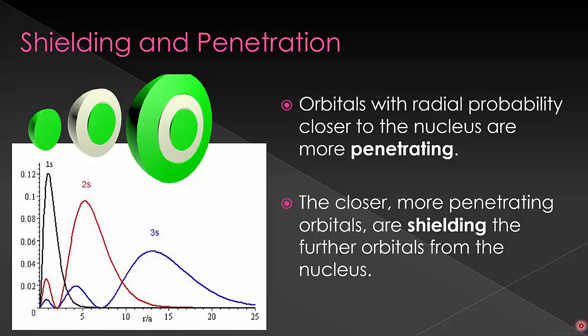We can also see that in between the 2s orbital and the nuclei are located the majority of the 1s electrons. So most of the 2s density is further out, and in between the 2s and the nuclei is most of the 1s. This means that the 1s electrons are going to be blocking the 2s electrons from feeling the nuclear charge as much. This concept is called shielding.